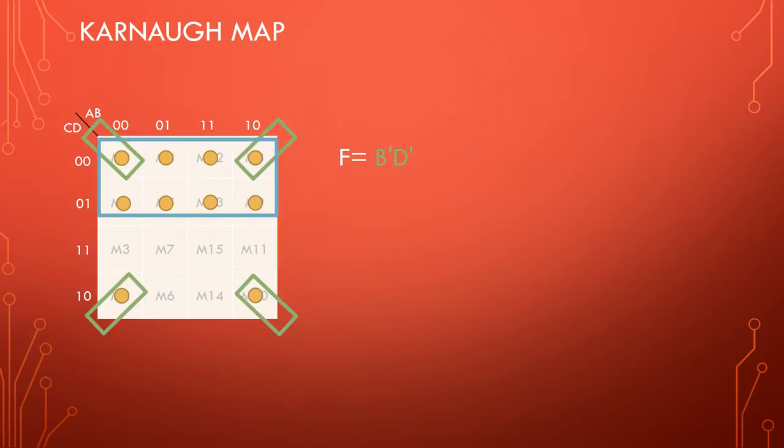The second group can be made by looping together all values in the first two rows. Across the top, both A and B change, so we can eliminate both. Down the side, we find that only C' doesn't change, so C' will be in this term. The second and last term is C'. Because we have only used prime implicants, we know that the most minimized form of the equation is F equals B' and D' or C'.